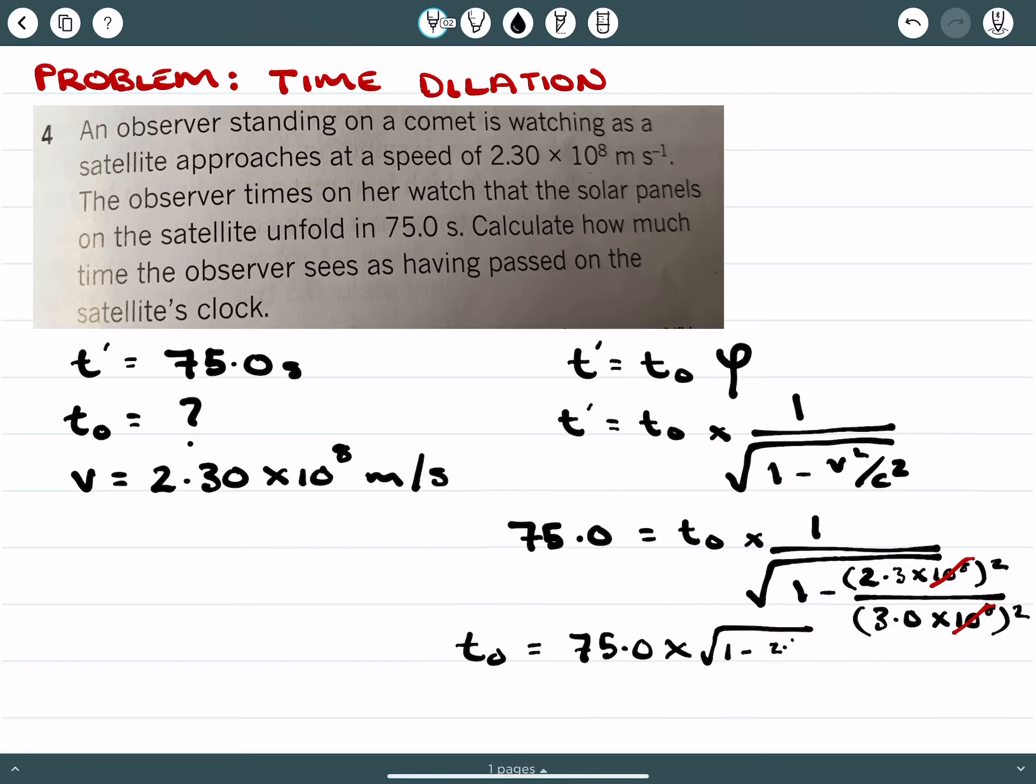And that would give that t₀ is equal to 75 times the square root of 1 minus 2.3 squared over 3.0 squared. And t₀ here ends up, after we apply our calculations, 48.15 seconds.